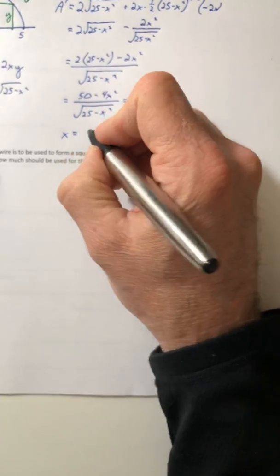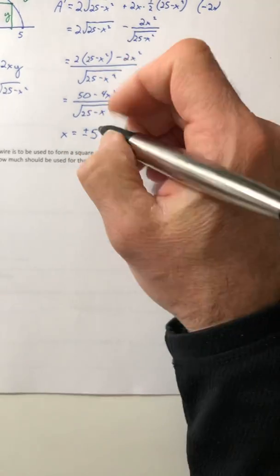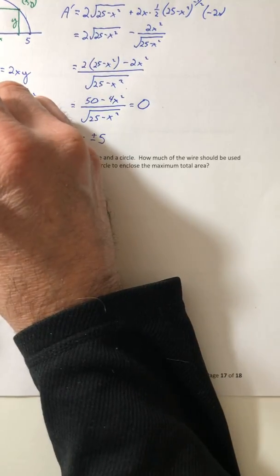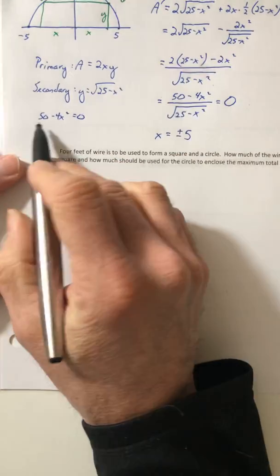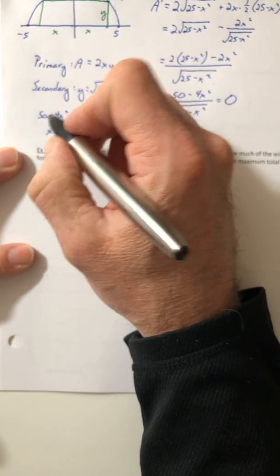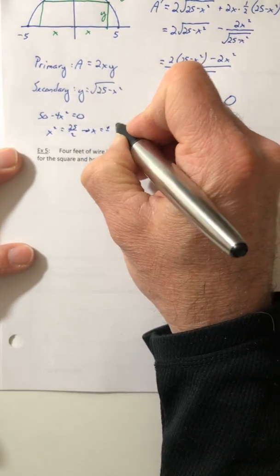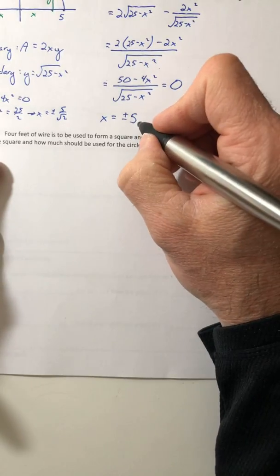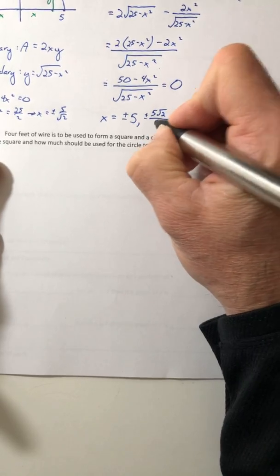And solve for x from the top and the bottom. So from the denominator, that would be plus or minus 5. And from the numerator, that would be, if you solved it, set the numerator equal to 0. So x squared would be 50 over 4 or 25 halves. So x would be plus or minus 5 over root 2. So if you rationalized it, that would be plus or minus 5 root 2 over 2.